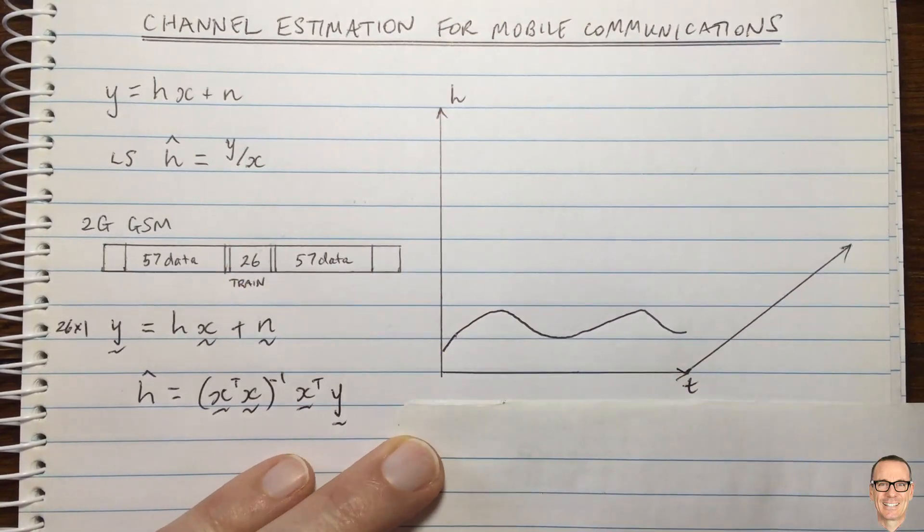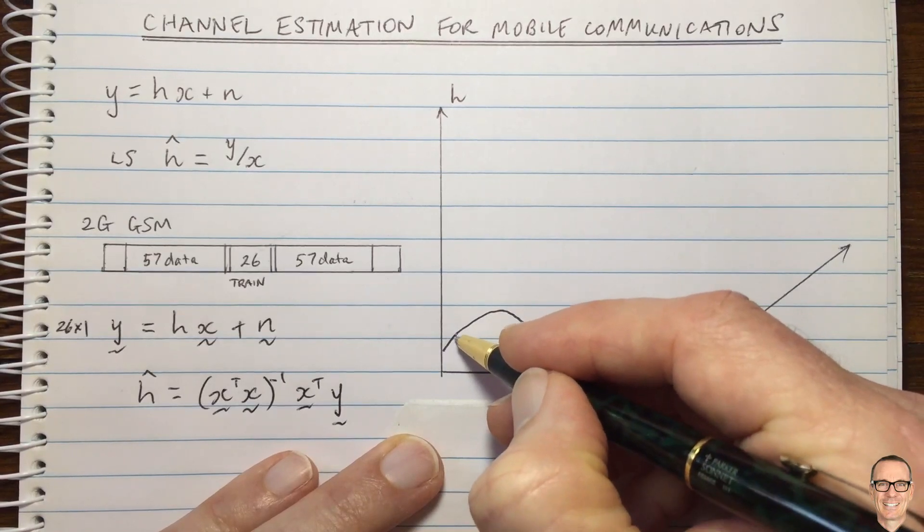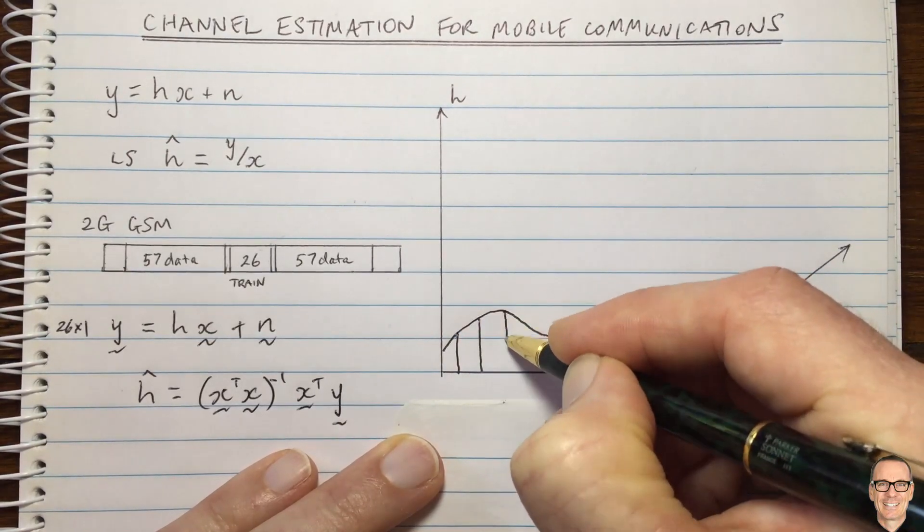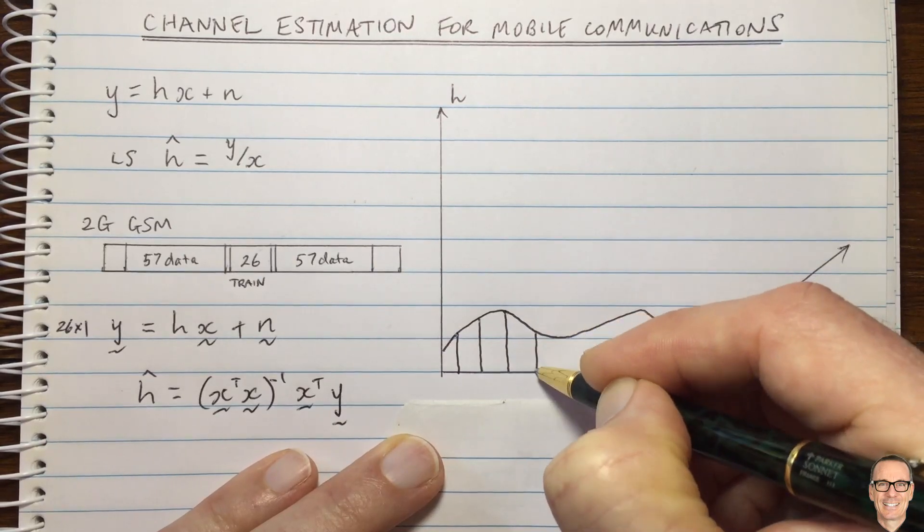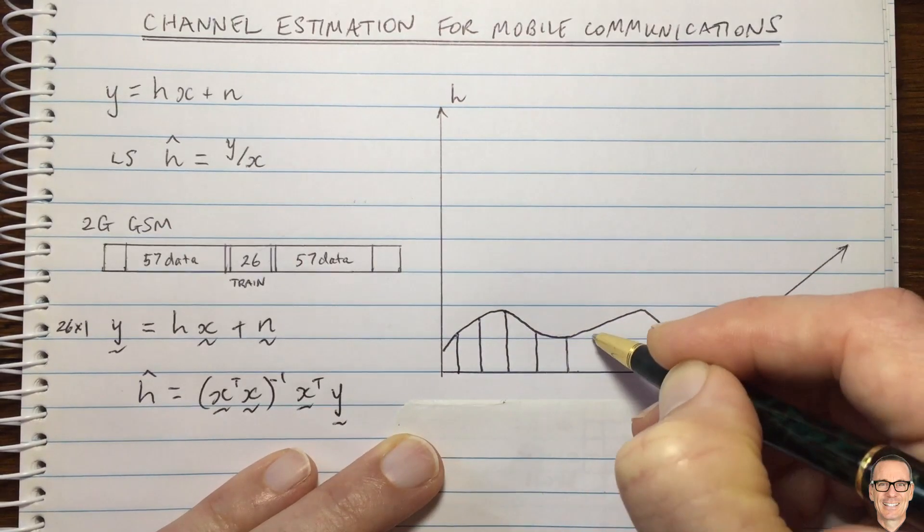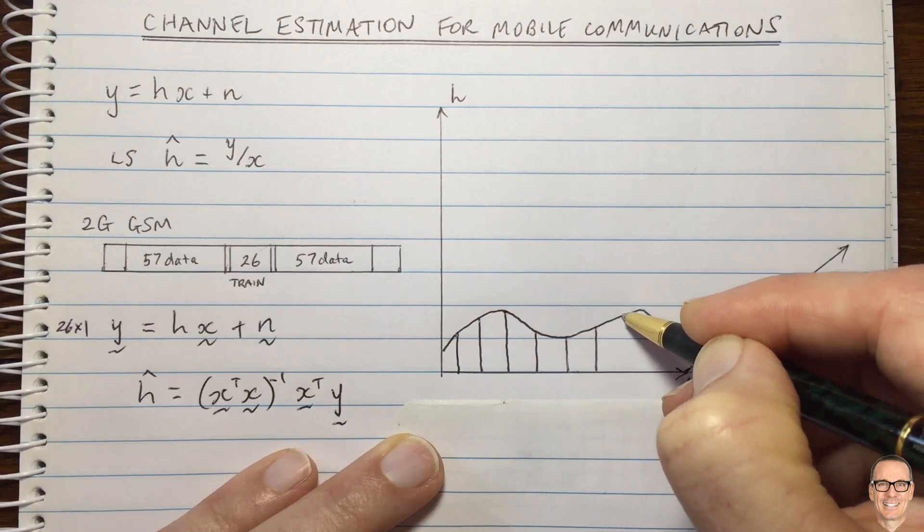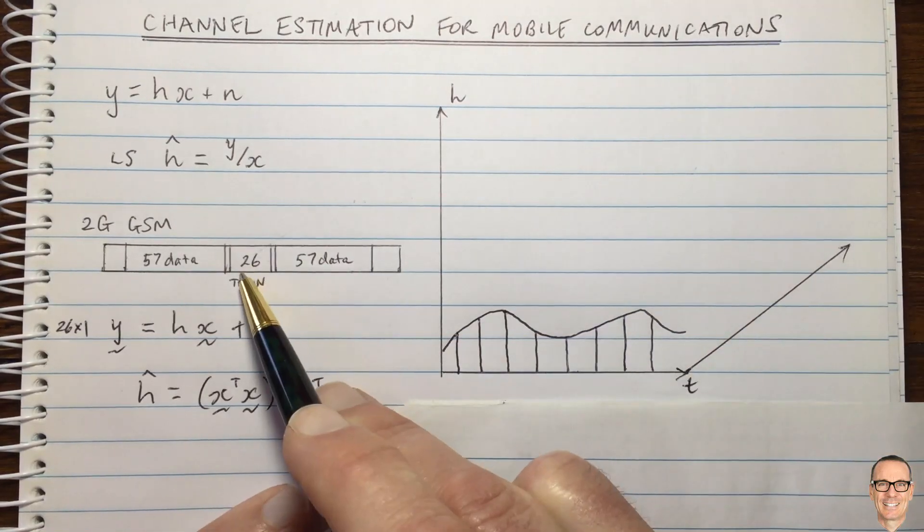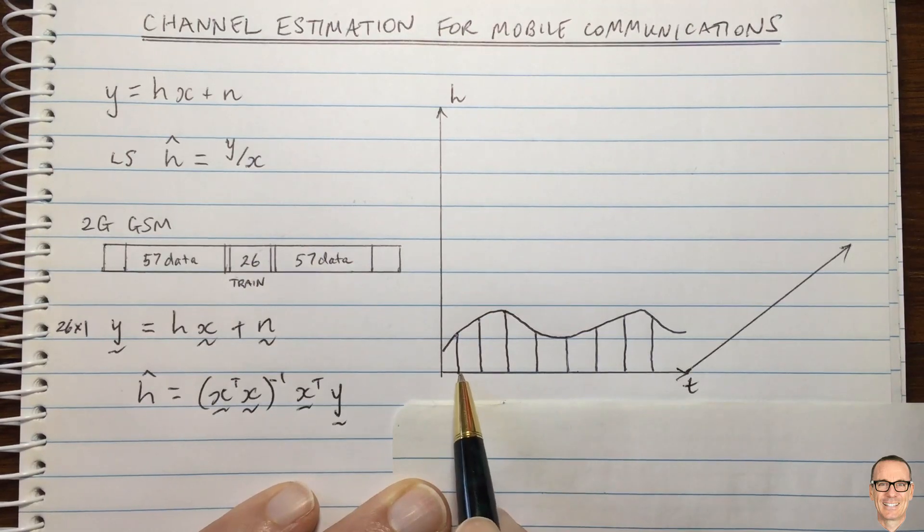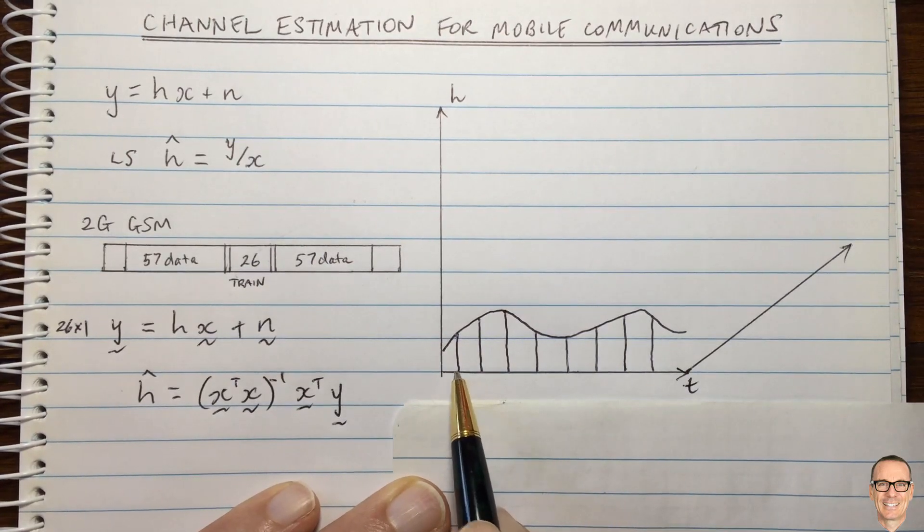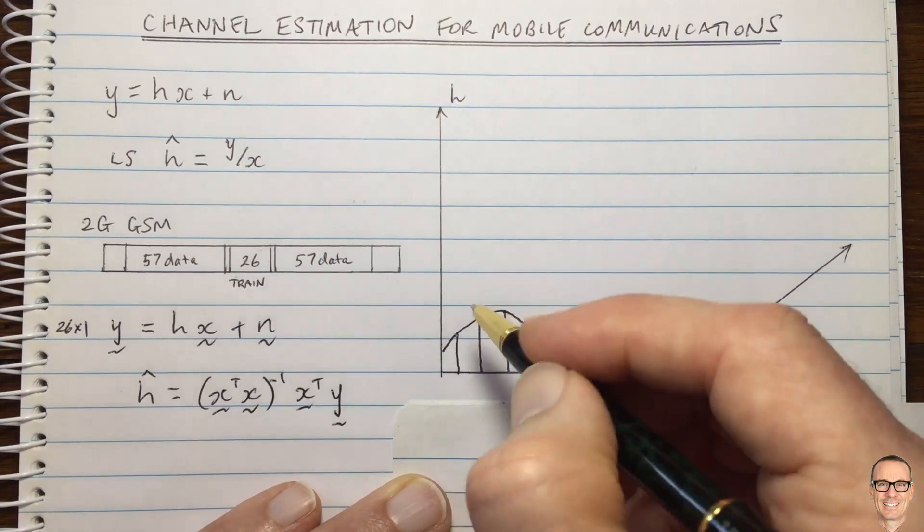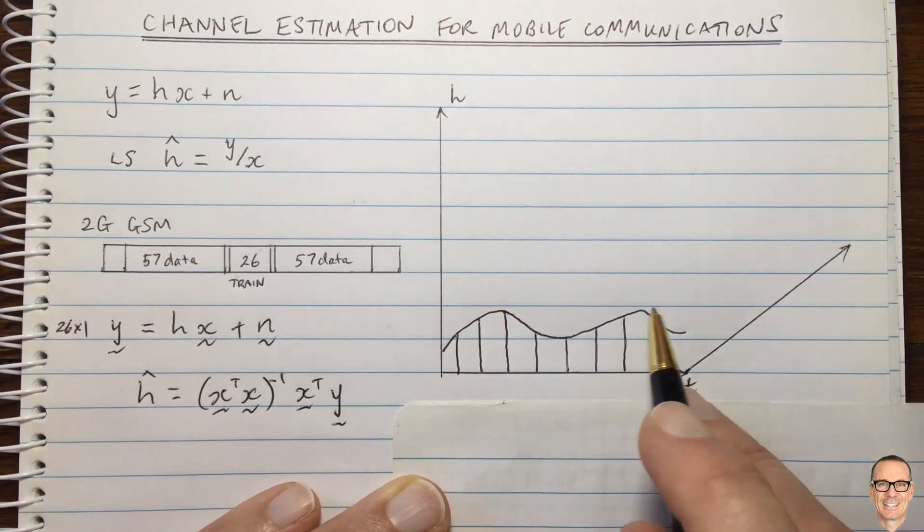What we could do if it's changing more quickly is we could be taking samples at a regular basis, a regular time interval for example, and in between this we can be sending data. This is what the GSM looks like if every time I'm drawing a vertical line here you're thinking of 26 packets—sorry, 26 bits. So if it's 26 training bits or you could send one training bit, it's up to you.